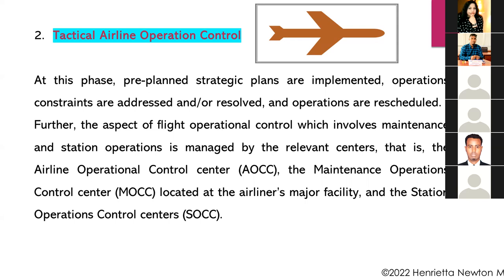The aspect of flight operational control involving maintenance and station operations is managed by relevant centers. These are: the Airline Operation Control Center (AOCC), the Maintenance Operation Control Center (MOCC) — normally located at the airliner's major facility — and the Station Operations Control Center (SOCC). Tactical airline operation control encompasses all three of these.